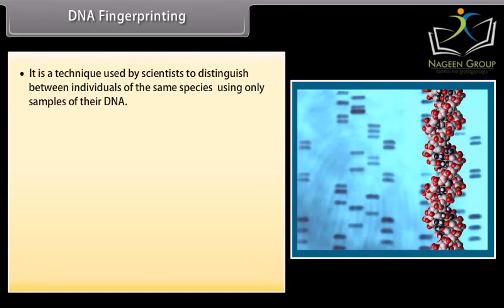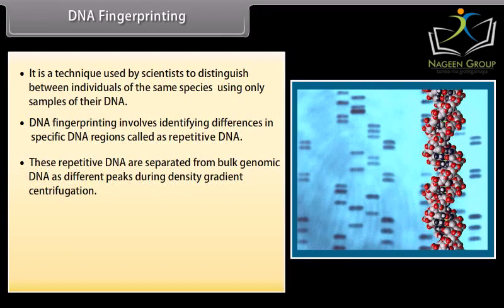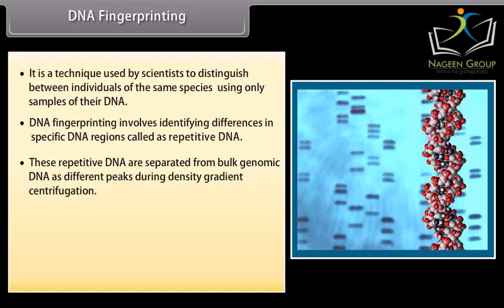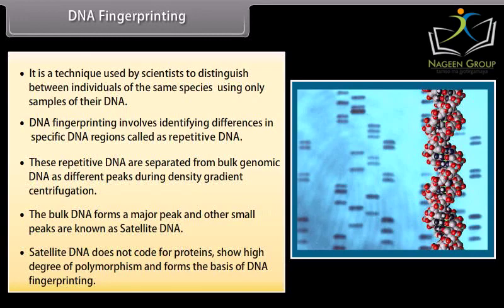DNA fingerprinting is a technique used by scientists to distinguish between individuals of the same species using only samples of their DNA. It involves identifying differences in specific DNA regions called repetitive DNA. These repetitive DNA sequences are separated from bulk genomic DNA as different peaks during density gradient centrifugation. The bulk DNA forms a major peak, and the other small peaks are known as satellite DNA. Satellite DNA does not code for proteins, shows a high degree of polymorphism, and forms the basis of DNA fingerprinting.